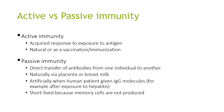Active immunity is a wide response to exposure to an antigen — it is natural or acts as a vaccination or immunisation. Passive immunity is a direct transfer of antibodies from one individual to another. It occurs naturally via the placenta or breast milk, or artificially when a patient is given IgG molecules, for example after exposure to hepatitis. Passive immunity is short-lived because memory cells are not produced.